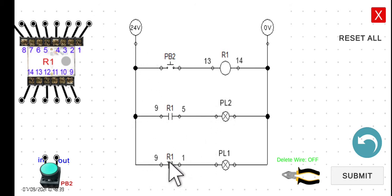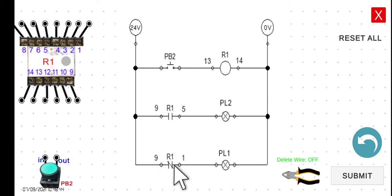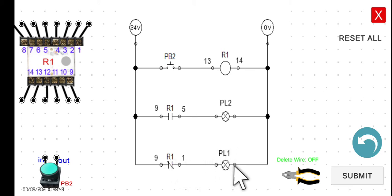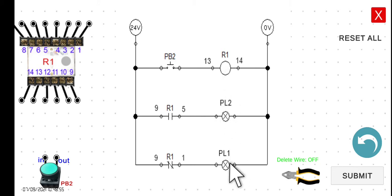However, on the third rung, current will be able to flow because this is a normally closed contact — there is a closed connection, so current flows through PL1. This means the moment we start the circuit breaker: Relay 1 is de-energized, PL2 is off, and PL1 is on.